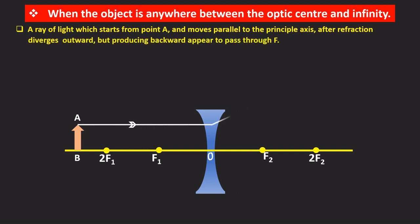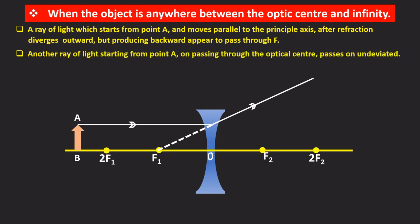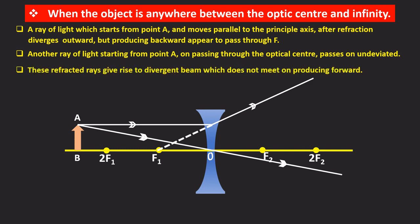A ray of light which starts from point A and moves parallel to the principal axis after refraction diverges outward but producing backward appear to pass through F. Another ray of light starting from point A on passing through the optic center passes on undeviated. These refracted rays give rise to divergent beam which does not meet on producing forward.